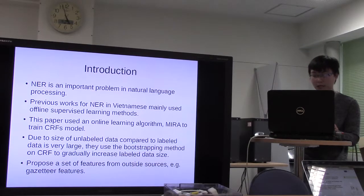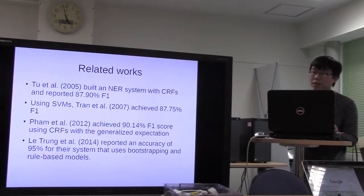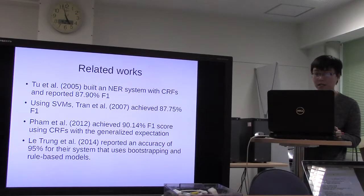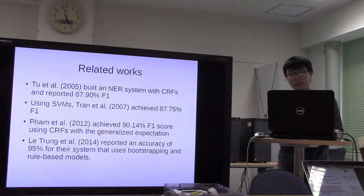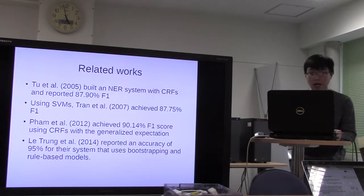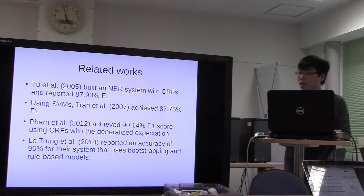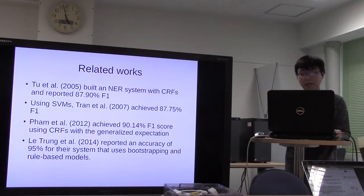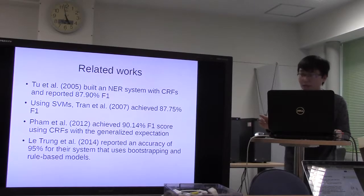There are some related works. In 2005, they built a named entity recognition system with CRF and achieved an F1 score of about 87.9%. In 2007, they used an SVM model and achieved 87.75% in F1 score.